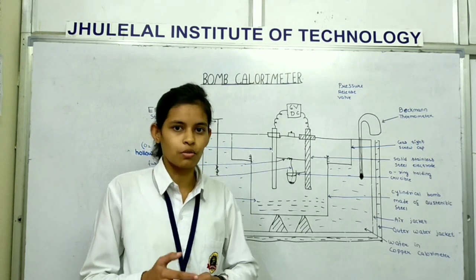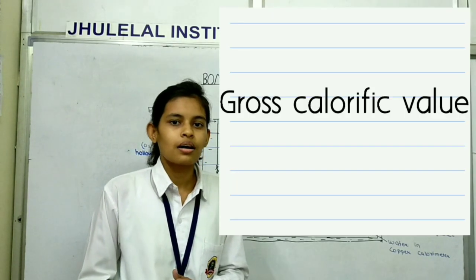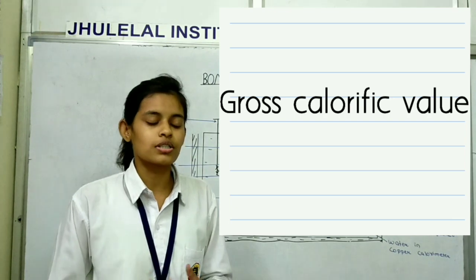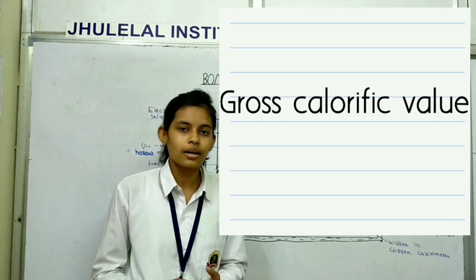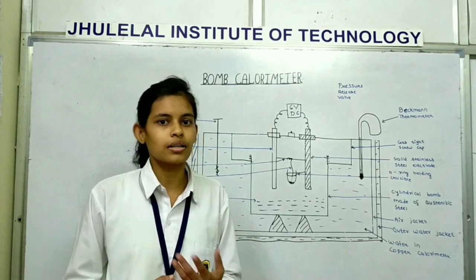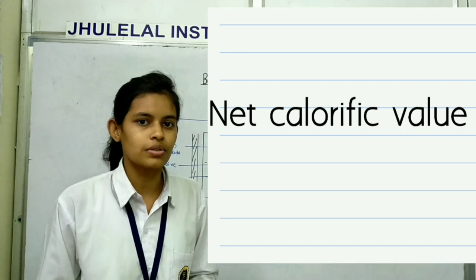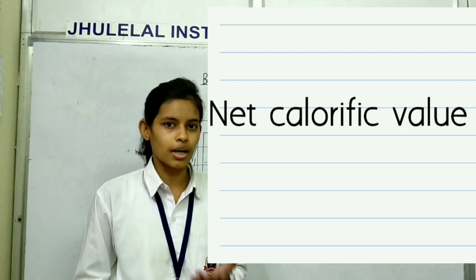The types of calorific value are: one is gross calorific value which is also called as higher calorific value, and another is net calorific value which is also called as lower calorific value.